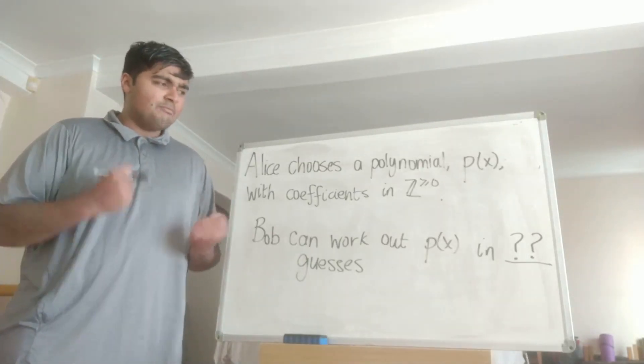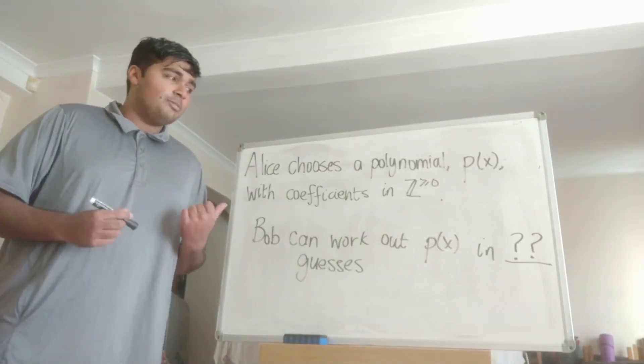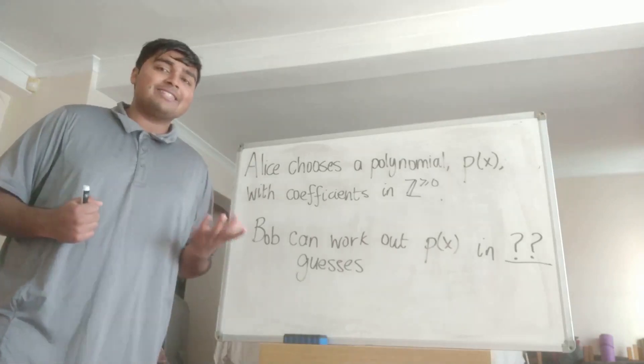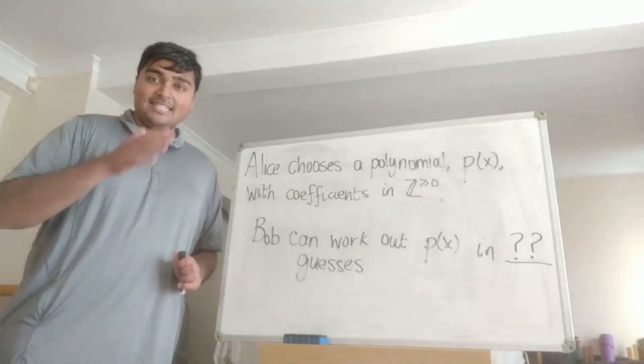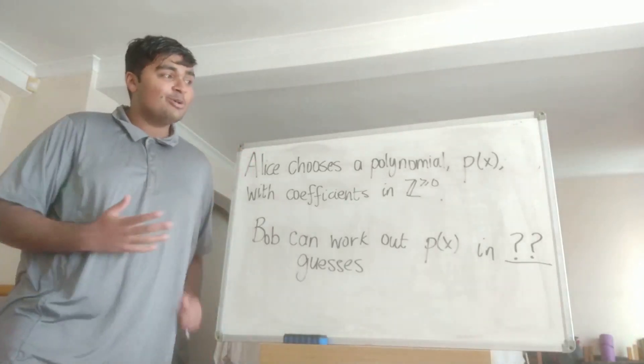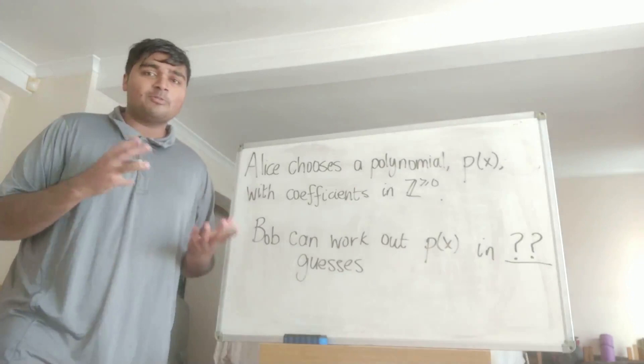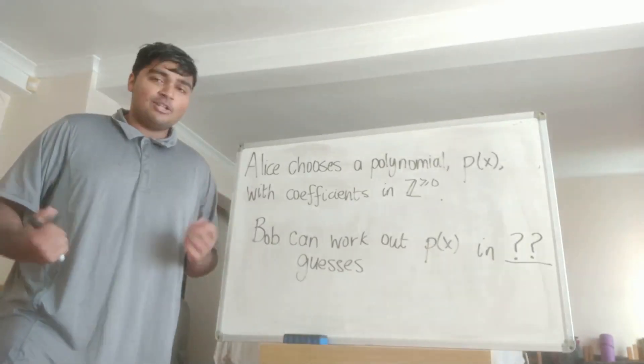We want to know what is the minimum number of guesses Bob requires to be able to guarantee that he knows what Alice's polynomial is. So Bob can ask to plug in certain numbers into Alice's polynomial and then from that, Bob's supposed to be able to deduce what this polynomial is.